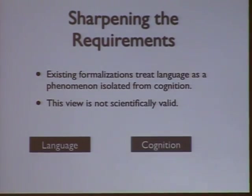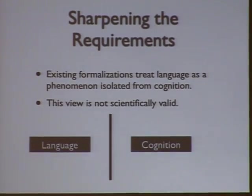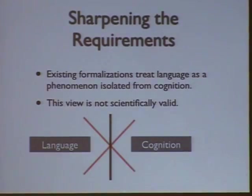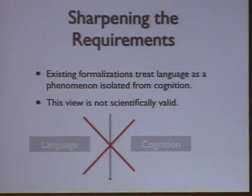If you look at the way existing formalizations do this sort of thing, they treat language and cognition as two completely separate formalizations. And we have a problem with this approach.